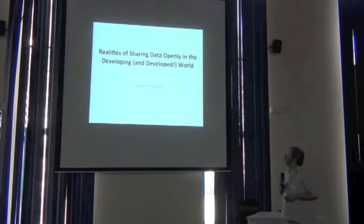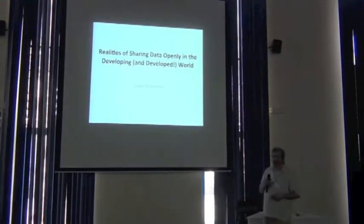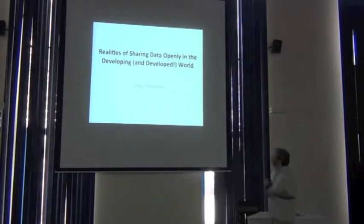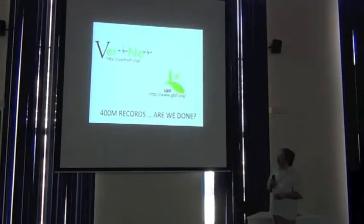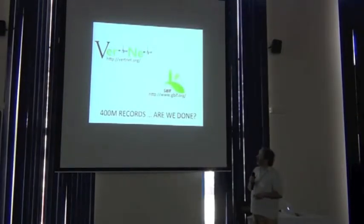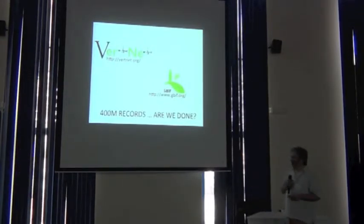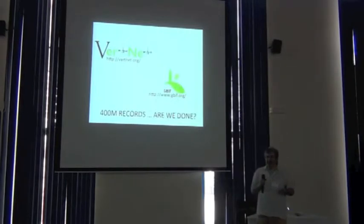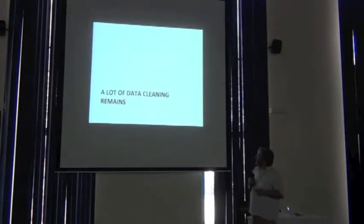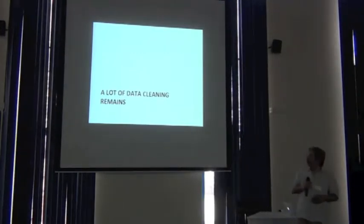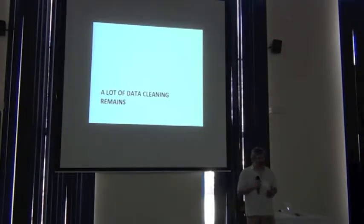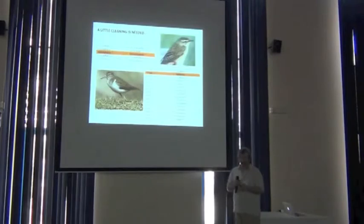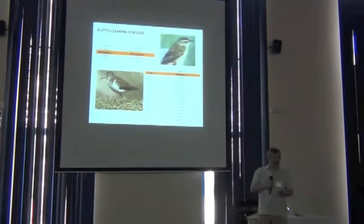Let's talk about the realities of sharing data in the developing world. What you'll see is that the developing world and the developed world are now quite different. We've talked about a bunch of initiatives, particularly VertNet and GBIF, and we keep seeing 393 million records — that's a lot of information. Are we done? Is that enough? I want to get you thinking about some of the realities. There's still a lot of work to do with data cleaning, which I think you already know.